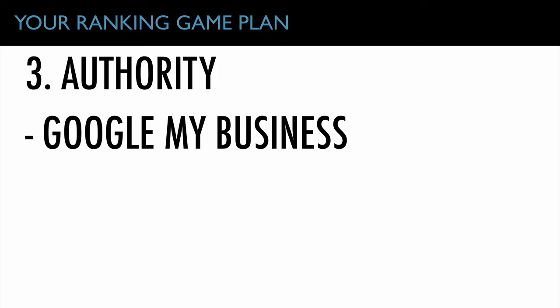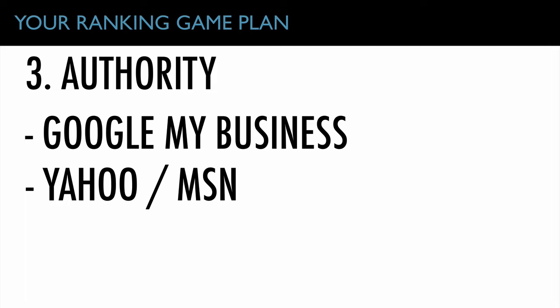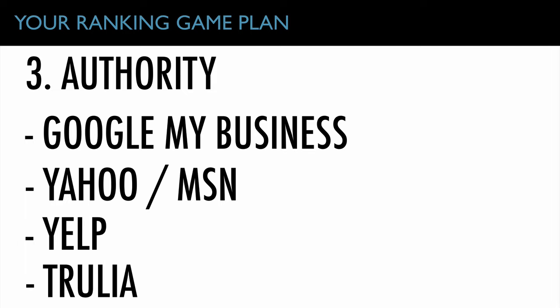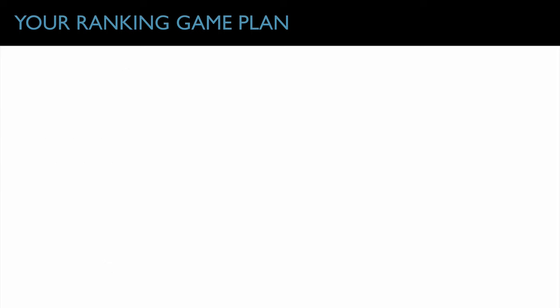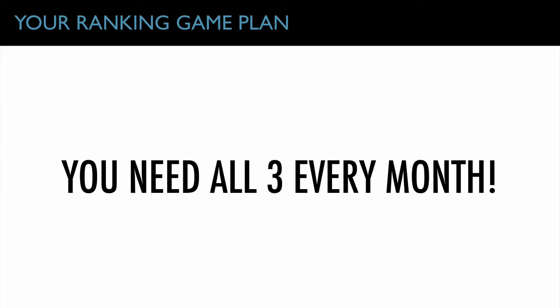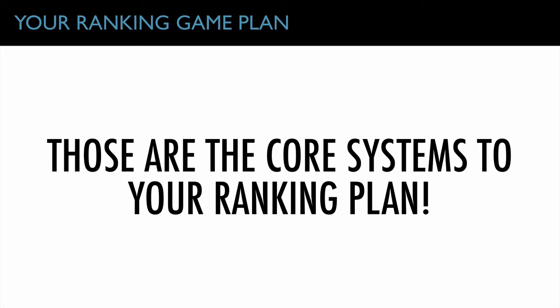Then you want authority backlinks — high-level, highly-branded websites that Google sees as authority platforms. When you generate a link from one of these back to your website, it shows Google you are an authority. Your Google My Business page counts as local, contextual, and authority. Your Yahoo and MSN profile, Yelp, Trulia, Facebook, Twitter, LinkedIn, YouTube — all those high-authority sites fit into this category. Link building needs to happen every month, consistently. You can't just start and stop — Google needs to see congruency in your marketing and see you as a true expert.